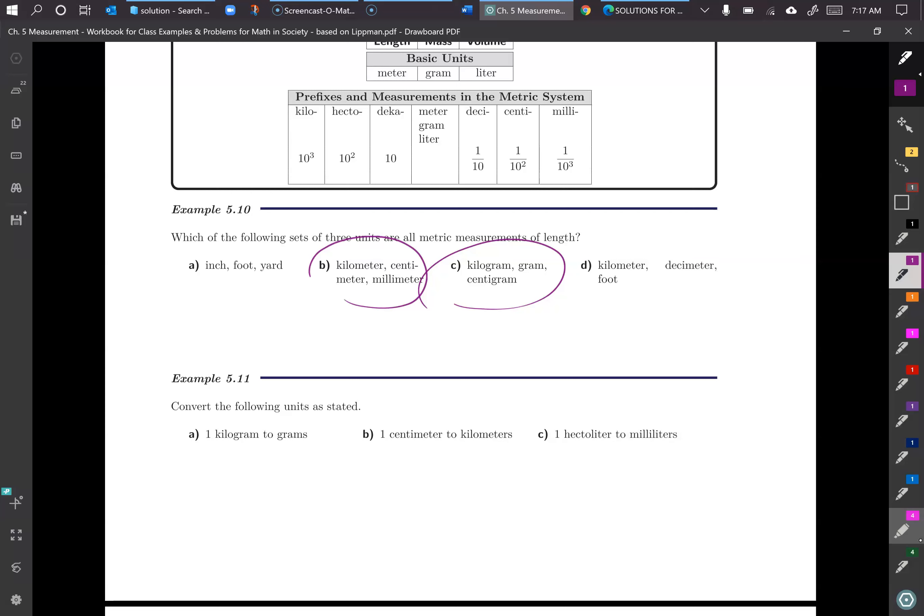For example, ounces would be 16 and we don't talk about time in here, but time is a different base. We have 60 seconds and things like that. So working in 10s is really nice for conversions.